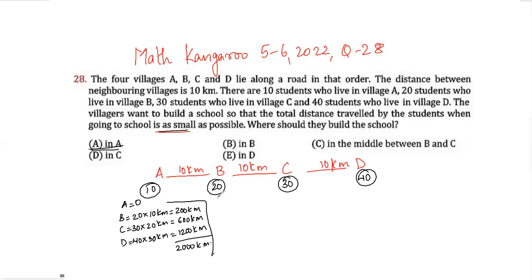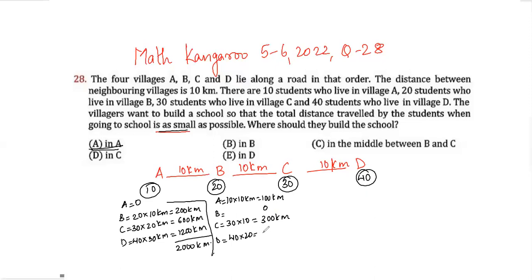Now let's see if the school is built in B. 10 students in village A travel 10 kilometers, giving 100 kilometers. Students in B travel 0 kilometers. 30 students in village C travel 10 kilometers, giving 300 kilometers. 40 students in village D travel 20 kilometers, giving 800 kilometers. Total distance traveled is 1200 kilometers.